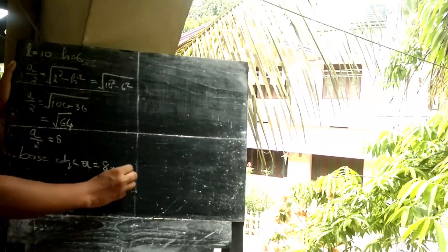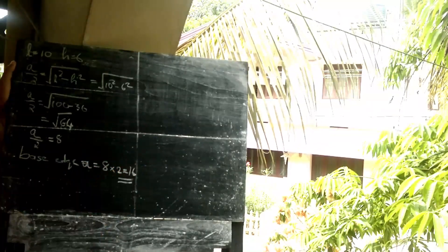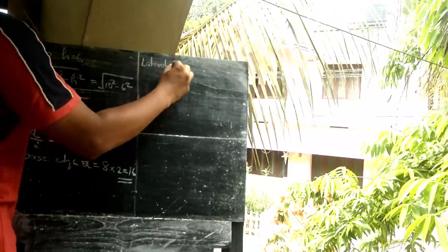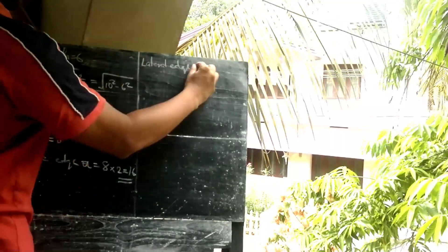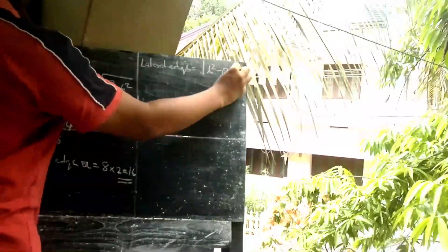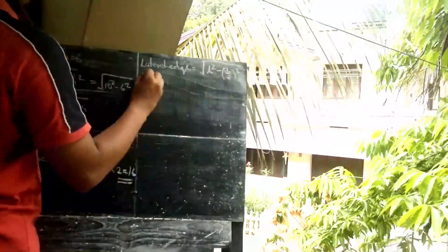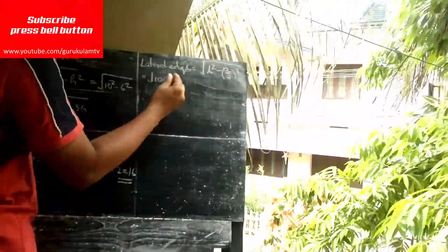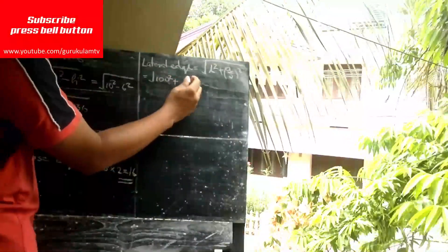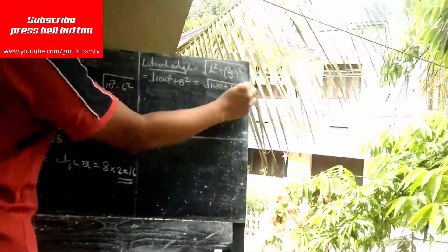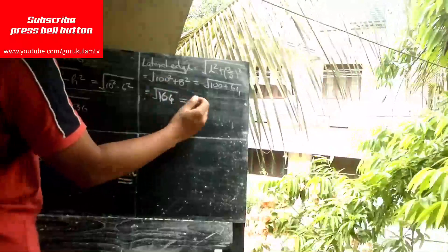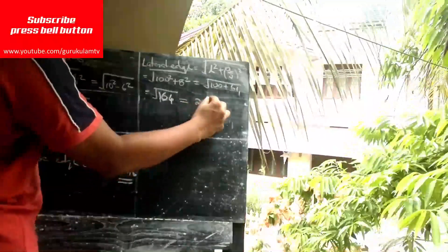We have the base edge and the lateral edge. The lateral edge is e. Then, e equal to root of l square plus a by 2 the whole square. Then, we substitute the values. We have 2 root 41.